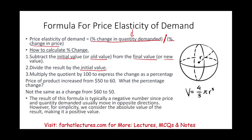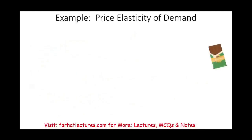The result of this formula is typically a negative number since price and quantity usually move in opposite directions. However, for simplicity, we consider the absolute value of the result, making it positive. Then we'll decide whether it's elastic or inelastic. The best way to understand this is to look at an example using the formula.